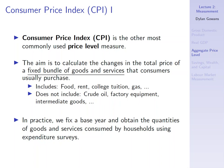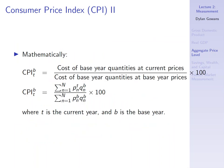In practice, we fix a base year, obtain the quantities of goods and services consumed by households in that base year using expenditure surveys, and then calculate the price of that bundle. This will depend on the base year, because the quantities of goods in these bundles change over time. For example, in 1980, people didn't tend to buy computers or internet, so using a 1980 bundle for CPI today would be very misleading. Mathematically, CPI equals the cost of base year quantities at current prices, divided by the cost of that same bundle at base year prices, multiplied by 100.